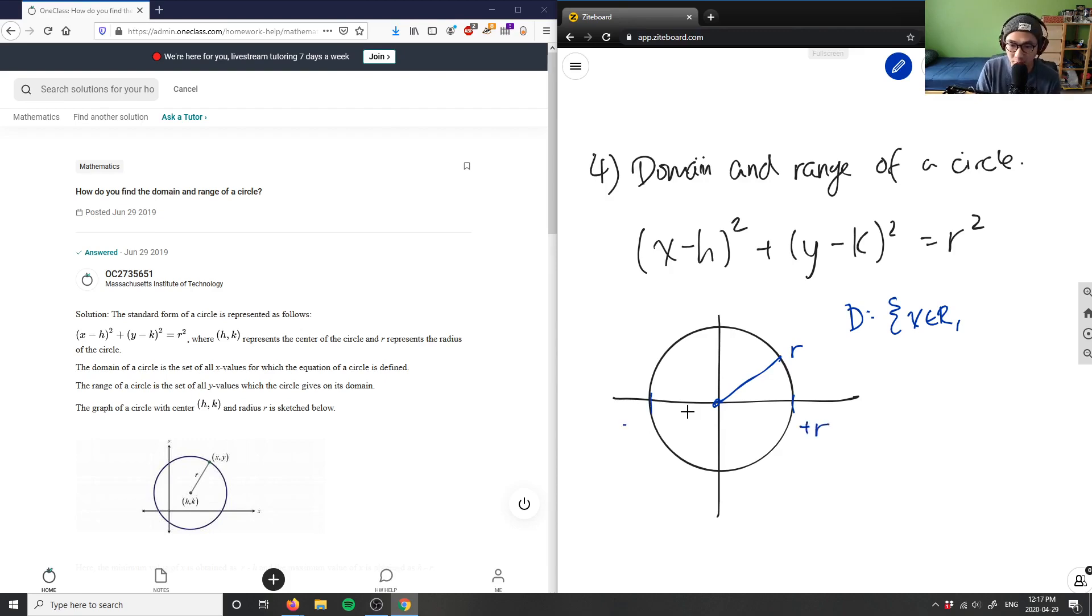So this here I guess this would be positive r or some radius, and this here would be negative r. So between those two points my function exists here, so I'm going to say between negative r less than or equal to x less than or equal to positive r.